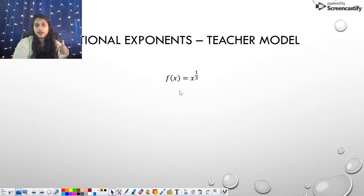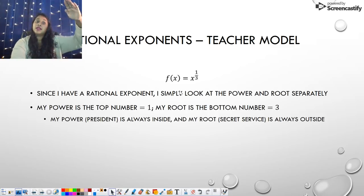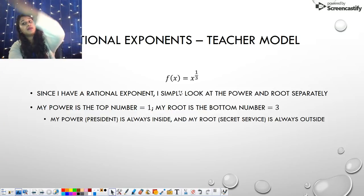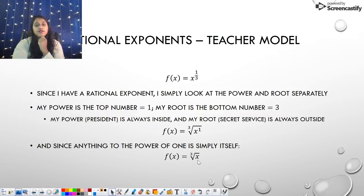So I have an example here, x to the 1/3. First thing I need to do is look at my power and my root. So what's my power? It's the number on top. It's 1. What's my root? It's the number on bottom. It's 3. So we write it on top, x to the 1st. There's that little president on the inside. There's the little secret service on the outside. Just to recall, anything to the 1st power is itself. Anything to the 0th power is 1. So x to the 1st power is simply x. So if I want to simplify that, that's the cubed root of x.